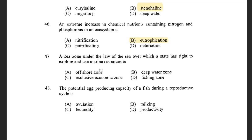Next question: A sea zone under the law of the sea over which a state has the right to explore and use marine resources is known as — options are Offshore zone, Deep water zone, Exclusive Economic Zone, and Fishing zone. The answer is Exclusive Economic Zone, also known as EEZ, and it is 200 nautical miles from the coast.